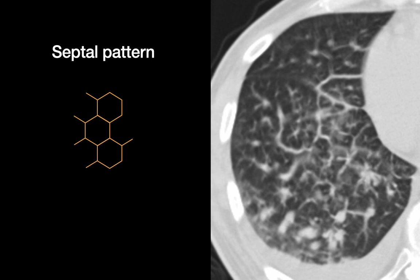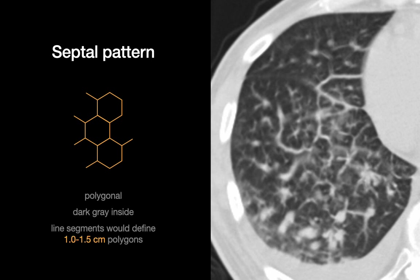The second pattern we're discussing is the septal pattern, which is formed by lines that begin to circumscribe what looks like polygons in the one to two centimeter size range. You may not see all the sides of a polygon, but you'll see some of them. The inside of the shapes these lines circumscribe will be dark gray — the color of normal lung.